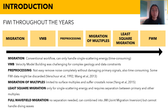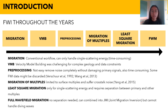Before the FWI method, migration was the conventional workflow for imaging the subsurface, but unfortunately it can only handle single scattering energy, which makes this method time consuming. Velocity model building, or VMB, was introduced next. However, VMB was quite challenging for more complex geology and it has data constraints.